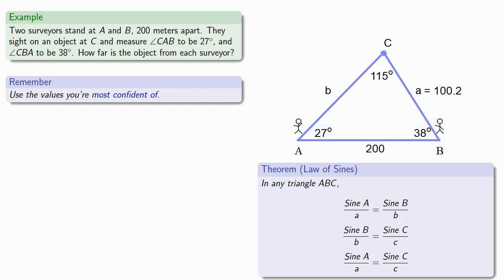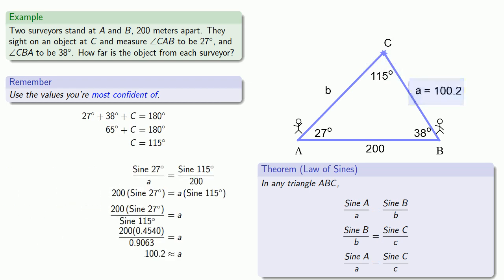Now, we just calculated two other values. The measure of angle C, which we found by solving this equation, and the measure of length a, which we found by solving this equation. And so the question is, which solution are we more confident in?